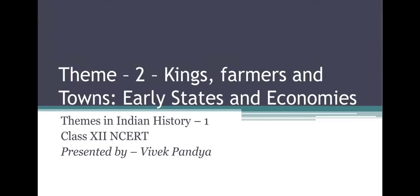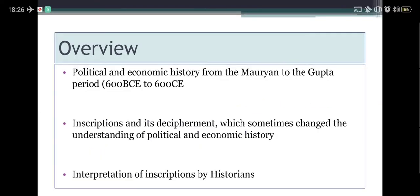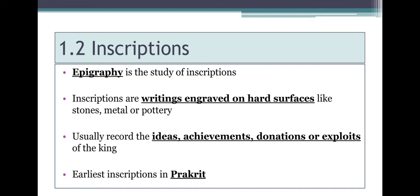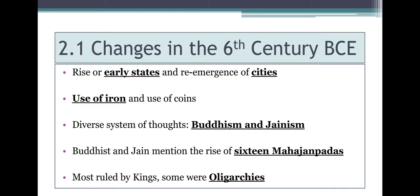Namaste and welcome to the Ministry of Social Science. My name is Vivek Pandya and today we are going to continue with the second chapter of class 12 history for CBSE students. The chapter's name is Kings, Farmers and Towns: Early States and Economies. Until now we have looked at how political and economic history of the Indian subcontinent changed because of the discovery and decipherment of inscriptions by James Princep, and through those inscriptions we came to know about different kingdoms, Mahajanapadas, and everything that existed during the 6th century BCE to the 6th century CE.